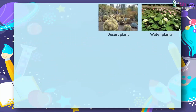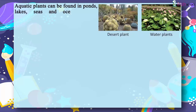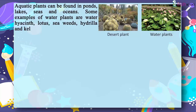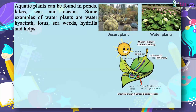Aquatic plants can be found in ponds, lakes, seas and oceans. Some examples of water plants are water hyacinth, lotus, seaweed, hydrilla and kelps.